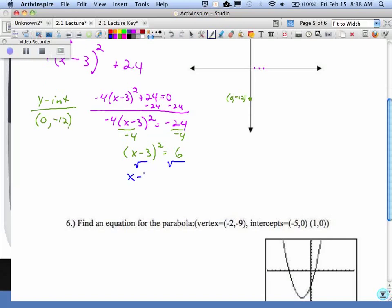Square root. What do we have to remember? Plus or minus the square root of 6. And then we will add 3. So 3 plus the square root of 6 and 3 minus the square root of 6 are the 2 intercepts.